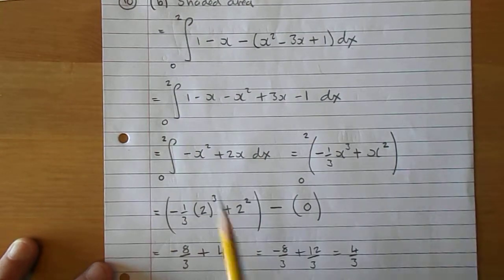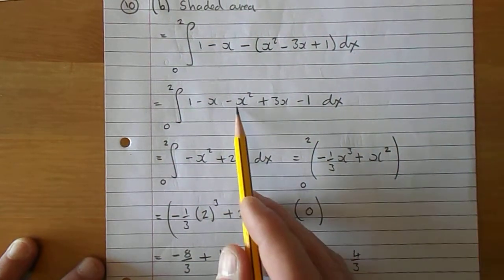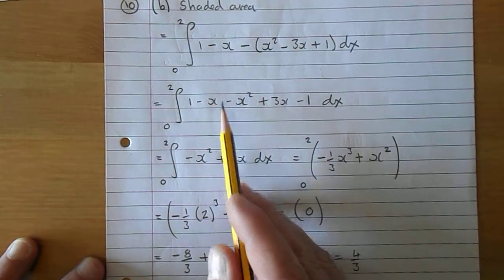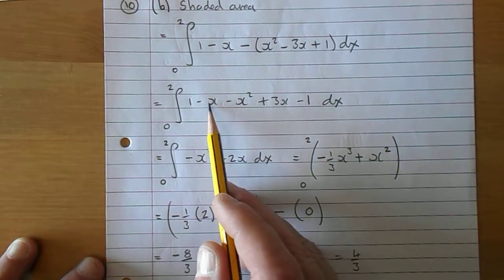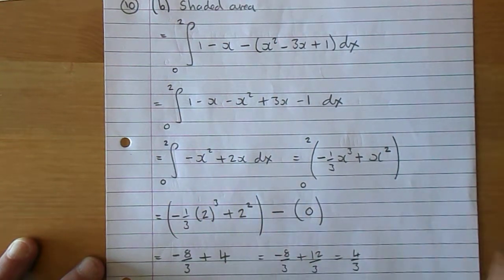And you can see that the 1 and the take 1, they disappear. And you have, now I tend to put the highest power of x first, so it's negative x squared, take x plus 3x is plus 2x.